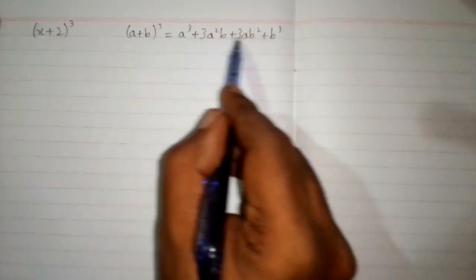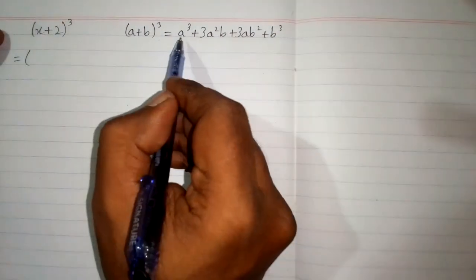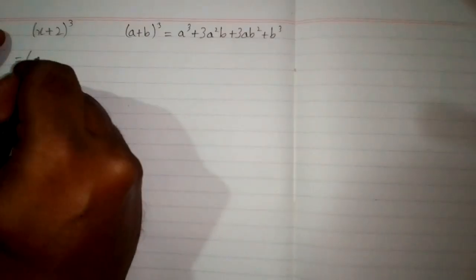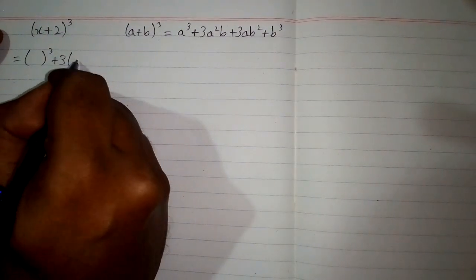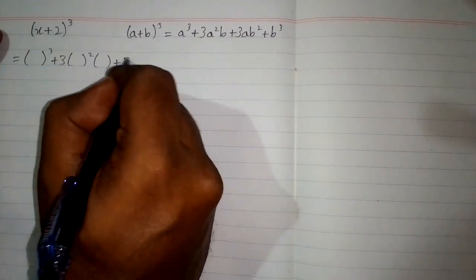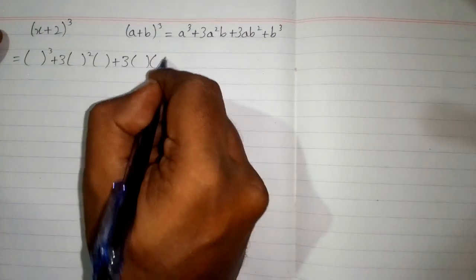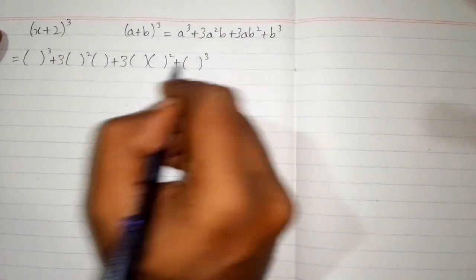So first we will write the structure of the formula. We can put brackets in place of a and b. So we will write a³ + 3 times a²b + 3 times ab² + b³.